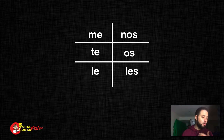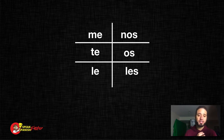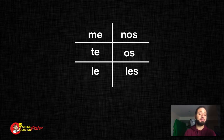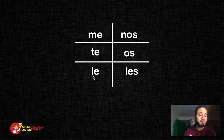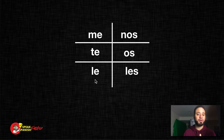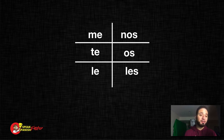One reason this is a little confusing for students is because these indirect pronouns are pretty much the same as the direct object pronouns. The only difference is: direct object pronouns use lo, la, los, las, whereas indirect object pronouns use le and les. This is important because it's one of the biggest mistakes — not only non-native speakers, but even native speakers make — sometimes using pronouns in the wrong areas.